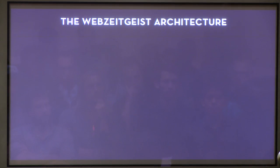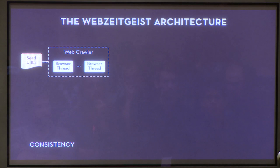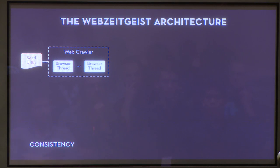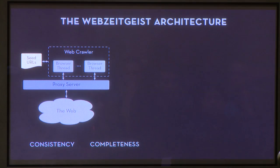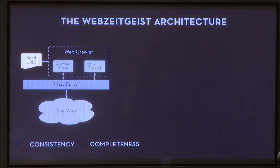The Web Zeitgeist architecture is based on four design principles. The first is consistency: the web is dynamic, but machine learning applications expect data to remain unchanged between accesses, so Web Zeitgeist stores static snapshots of page designs. The second is completeness: Web Zeitgeist is intended to be a general design mining platform, so if an application needs a particular piece of data, Web Zeitgeist should provide it, saving all resources and properties that contribute to a page's visual design.